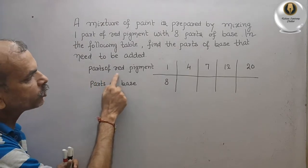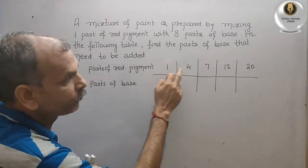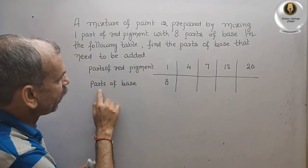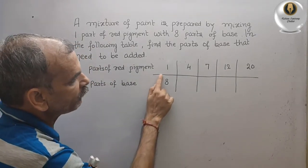They have given parts of the red pigment as 1, 4, 7, 12 and 20. Here they have given parts of the base, only 8 is given.